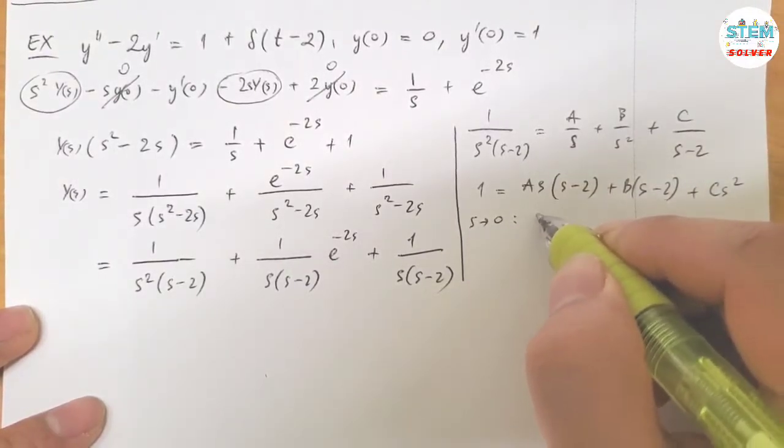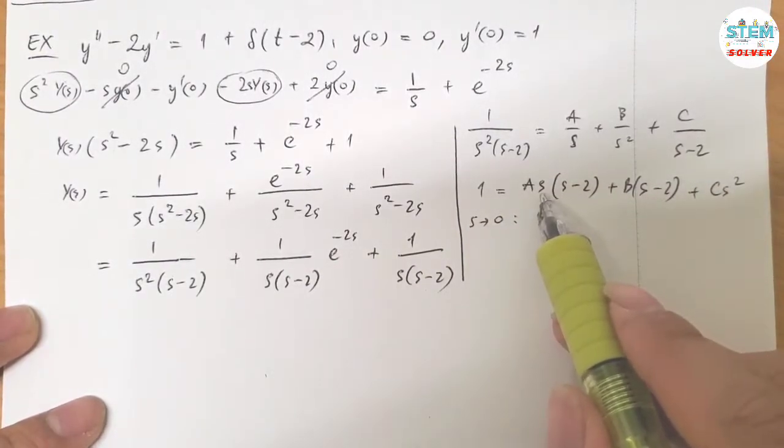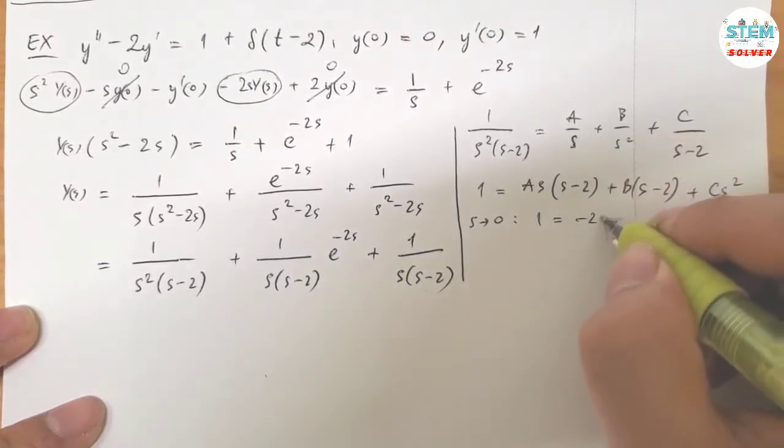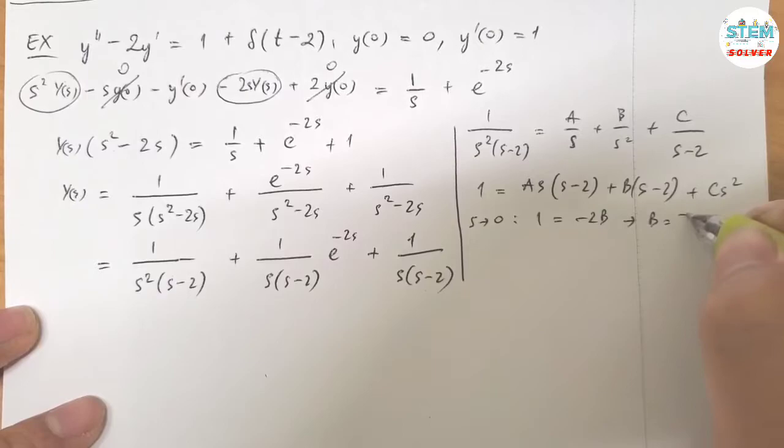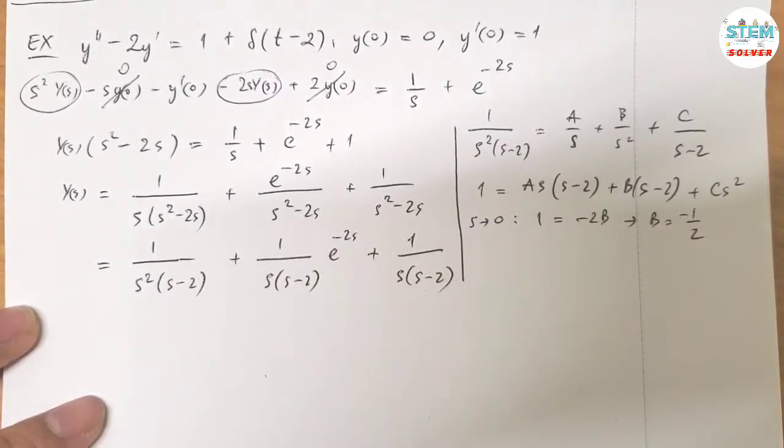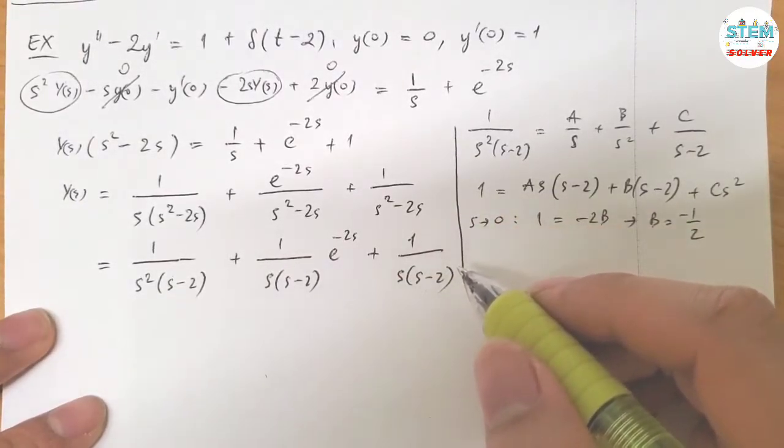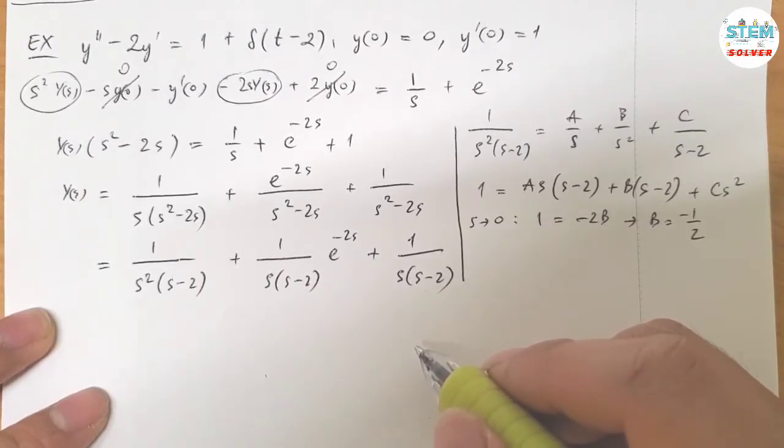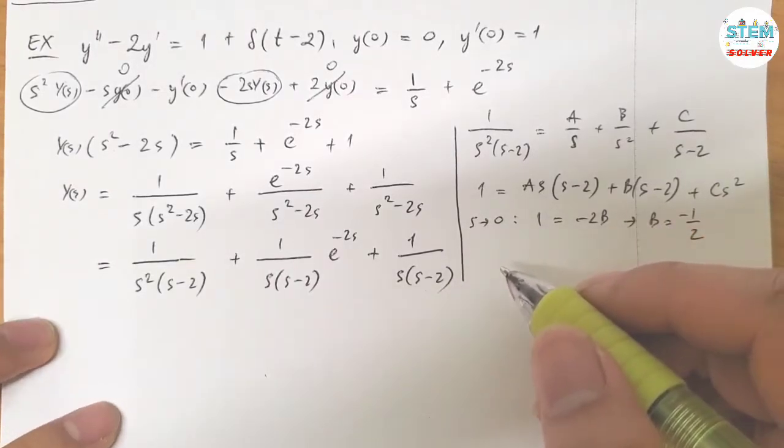Let S equal 0, I have 1 equals, it eliminates this and this, so I have negative 2B. Then B equals negative 1 half. Yeah, B equals negative 1 half.